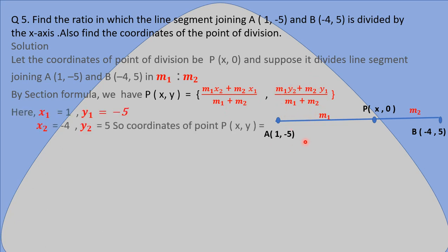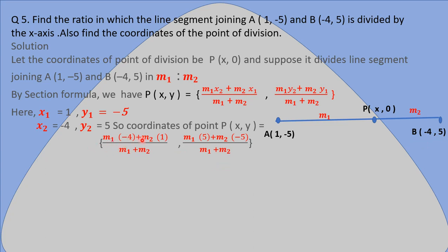Here A is the first point, so x1 = 1 and y1 = -5. B is the second point, so x2 = -4 and y2 = 5. Putting the values in, the coordinate of point P is given by x = (M1·(-4) + M2·1) / (M1 + M2), and for y: y = (M1·5 + M2·(-5)) / (M1 + M2).